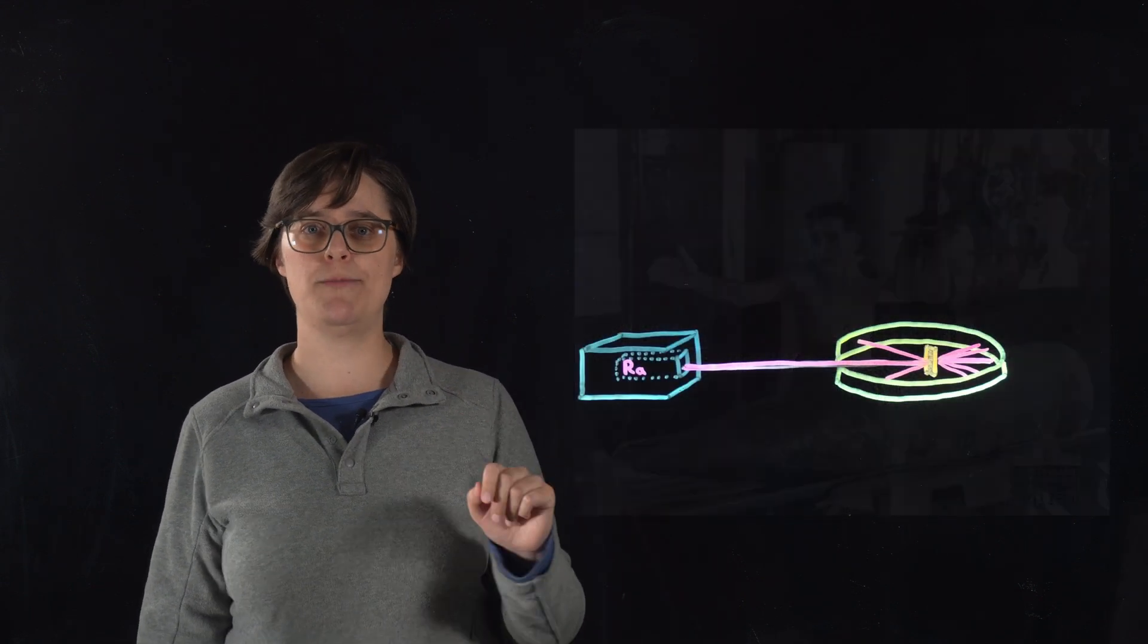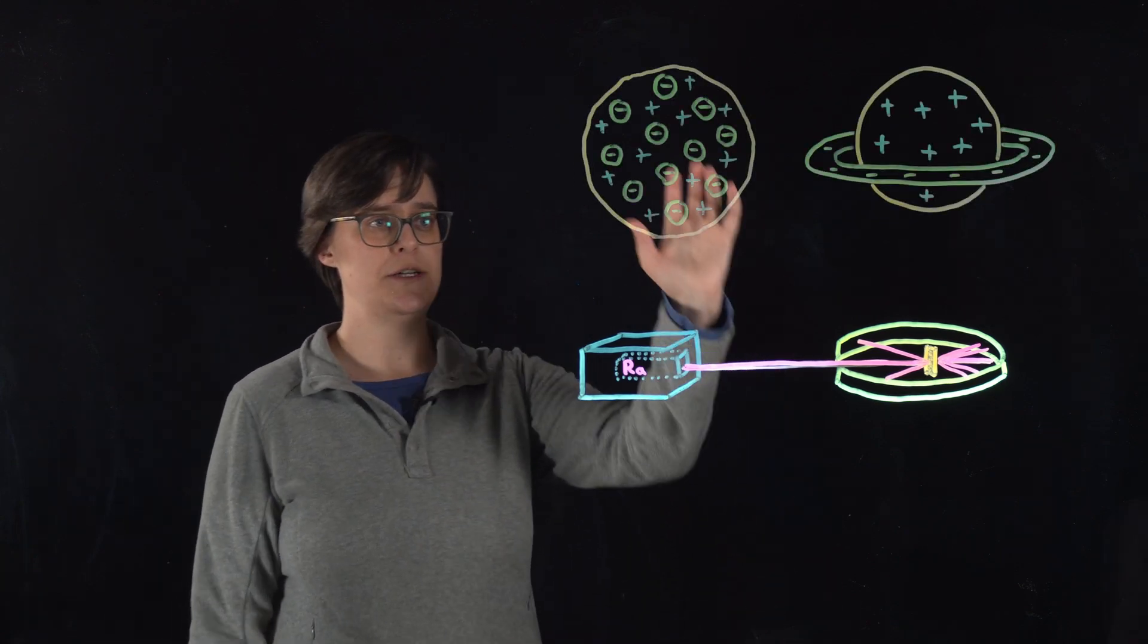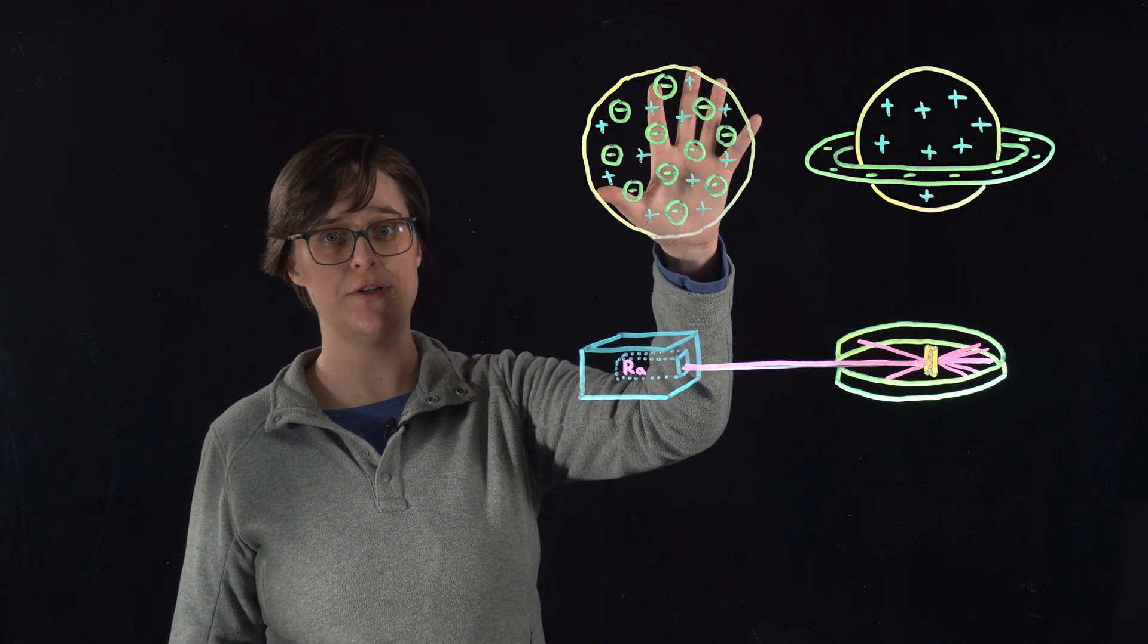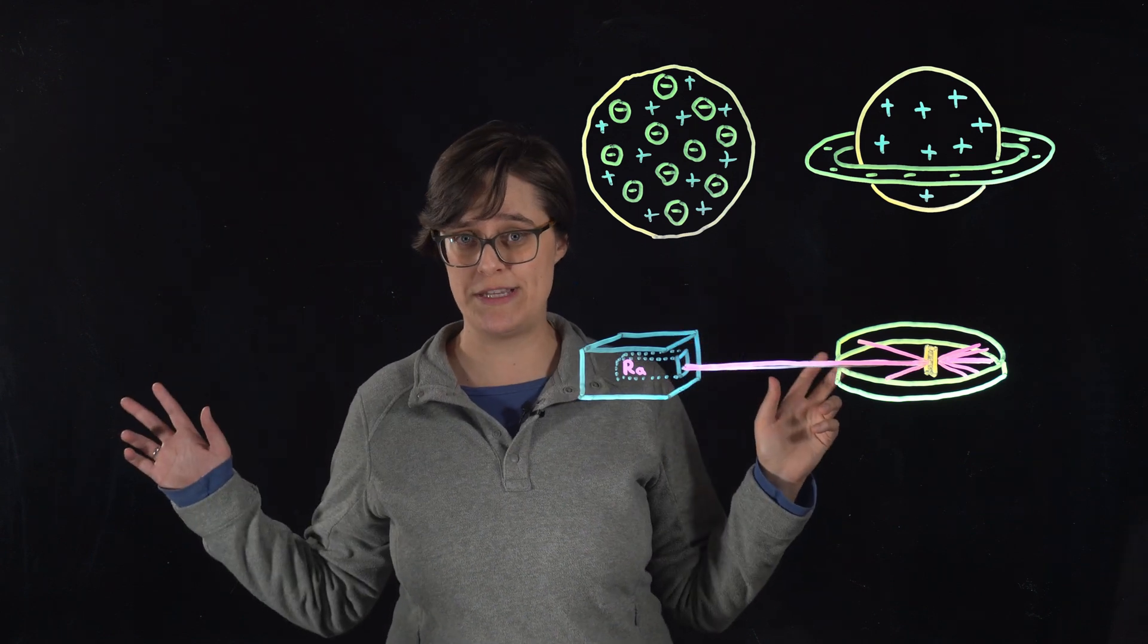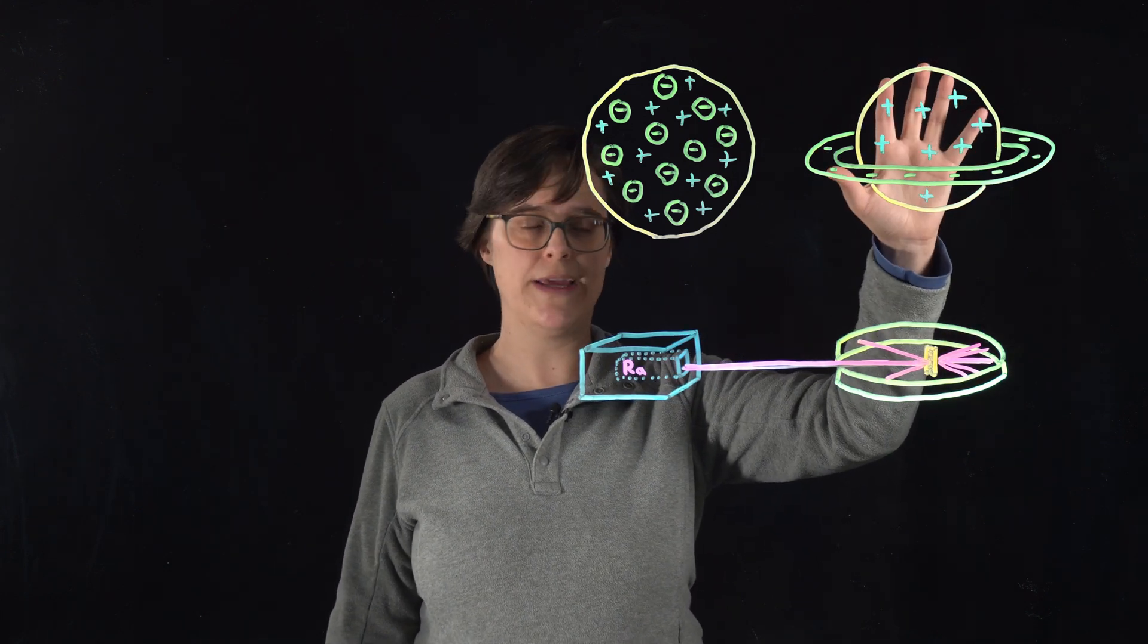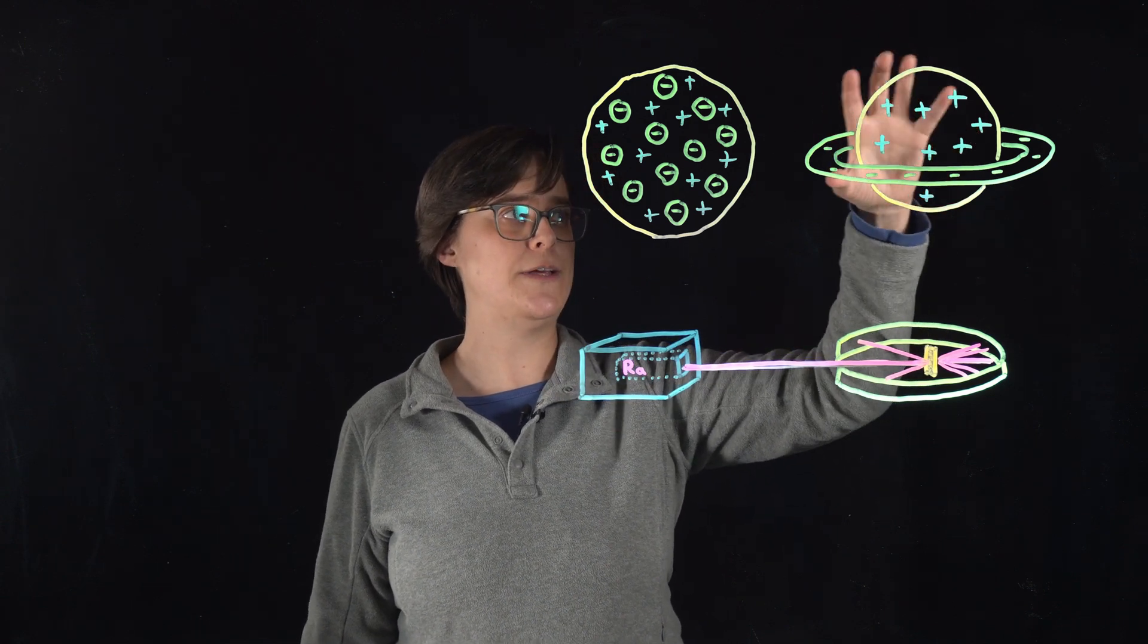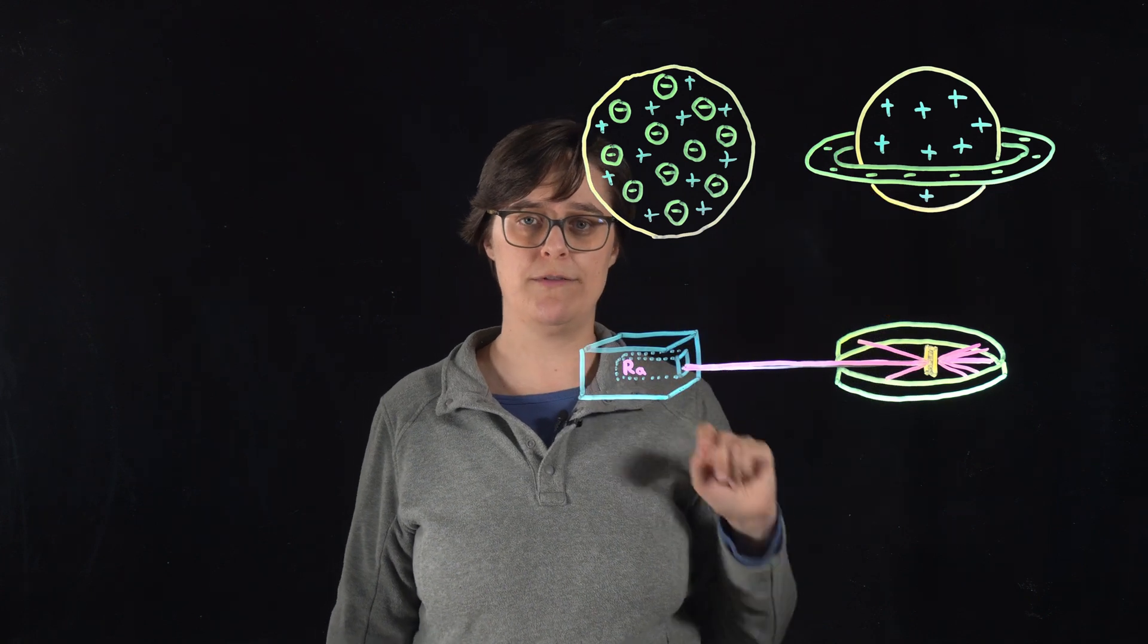At this point in time, we have two competing atomic models. J.J. Thompson's plum pudding model, in which negatively charged electrons are embedded in a positively charged pudding, like raisins in a disgusting cake, and Hantaro Nagaoka's Saturn-like atom, in which there is a positively charged sphere surrounded by a halo of negatively charged electrons.